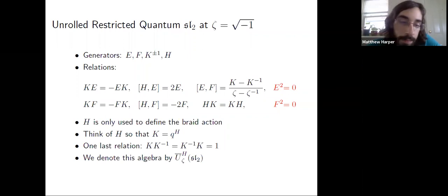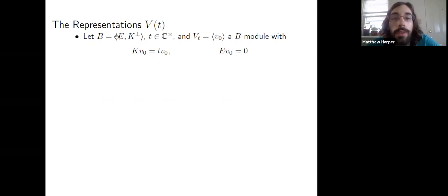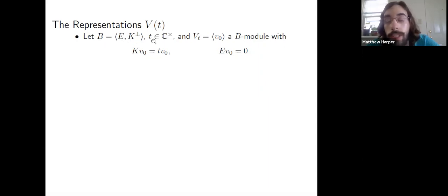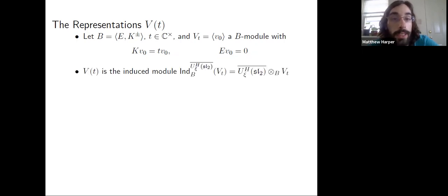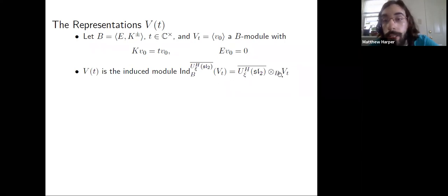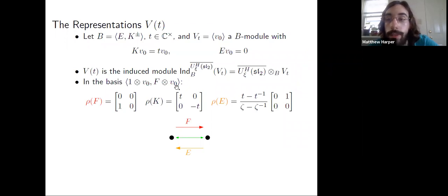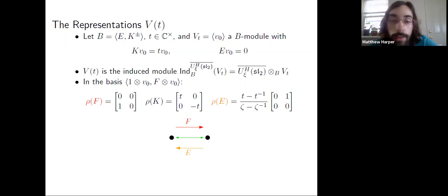For the representation, we take the Borel subalgebra — generated by E's and K's — and pick some t, a non-zero complex number. We act on a one-dimensional vector space by the Borel where K acts by t and E acts trivially. To get a representation of the whole quantum group we induce. Anything inside V can pass through the tensor product and the F's sit on the left. What remains is a standard basis where either a 1 or a single F is present — making use of the fact that F squared equals zero, so there's either an F or there's not. In this standard basis, this is our representation.